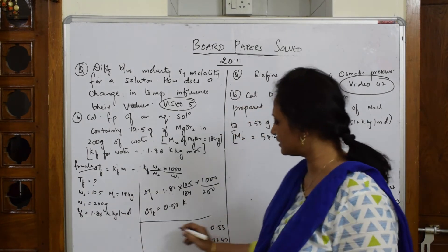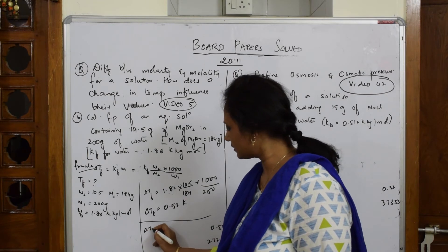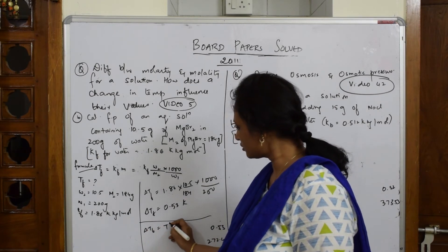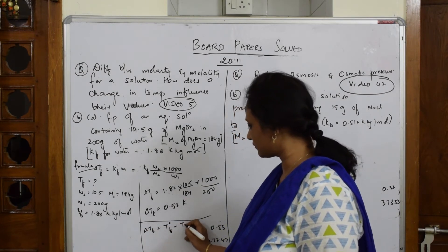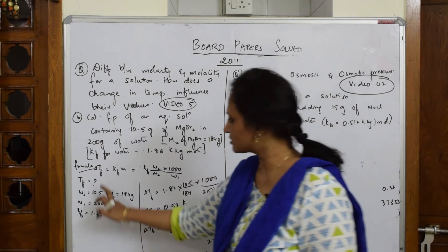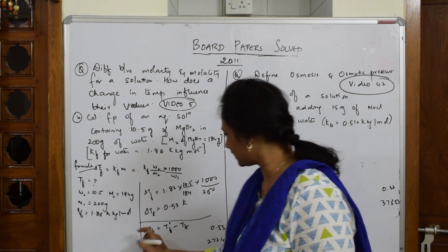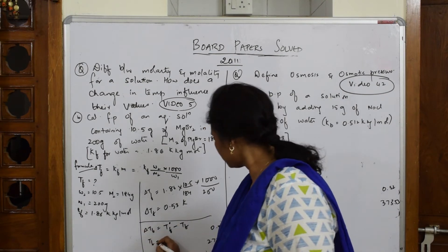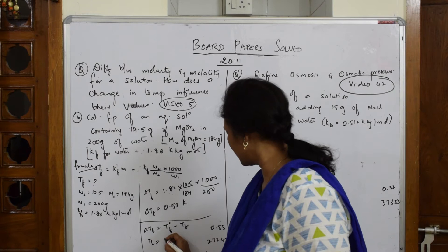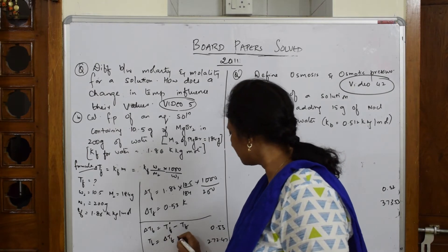The sum is not complete because I have to find TF. The second formula is delta TF equals T naught F minus TF. This is one formula we learned.